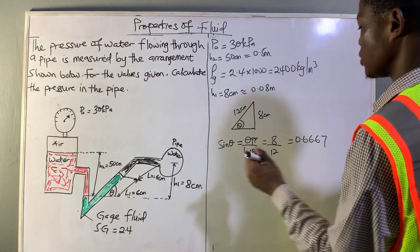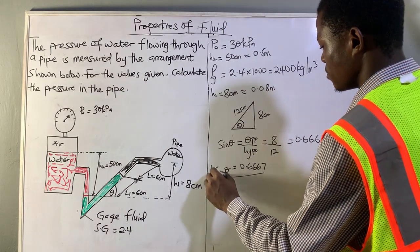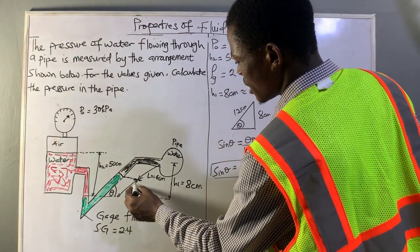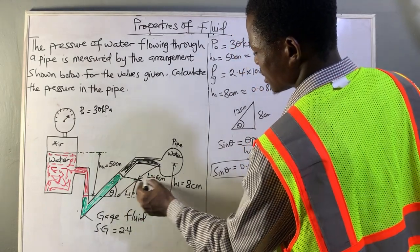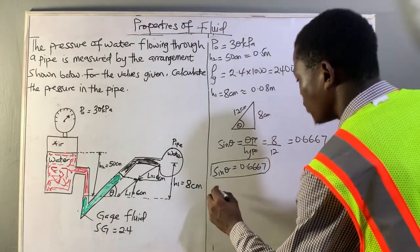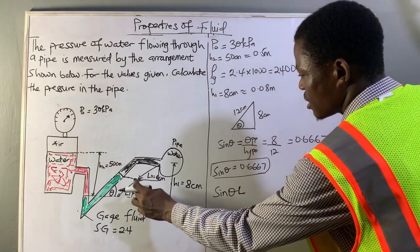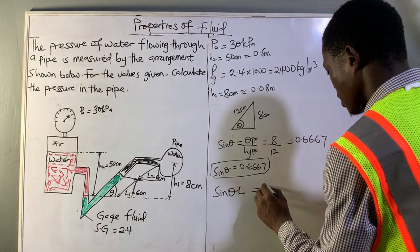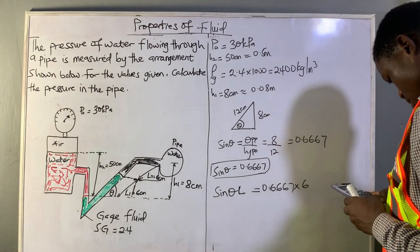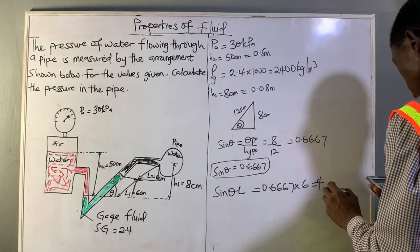The angle theta is arc sine of 0.6667. Let's leave it in this form for now. Since we need the vertical height, we would like to find the height here. Let's find this first height, the L1 side. That will be sine theta times L, the vertical height, which gives us 0.6667 times 6 centimeters, which is 4 centimeters.